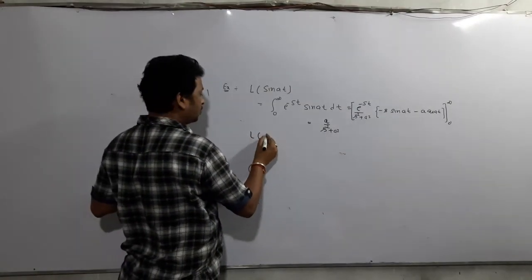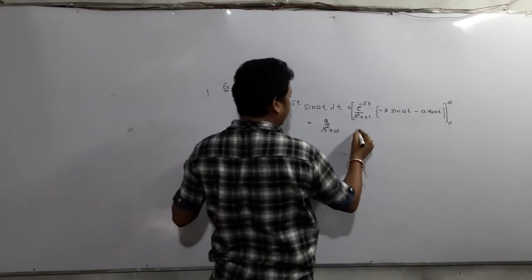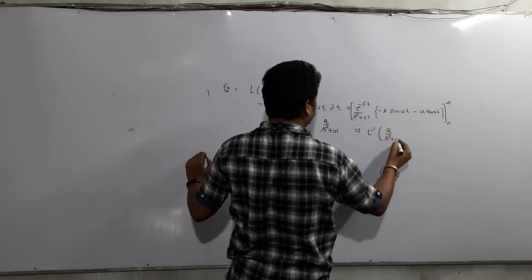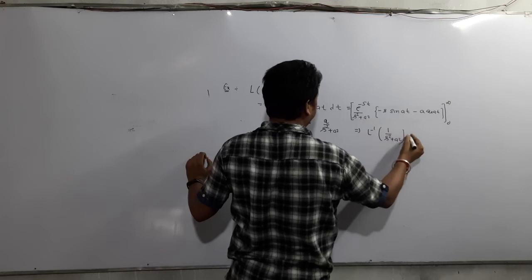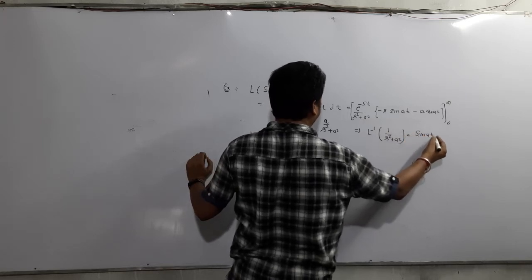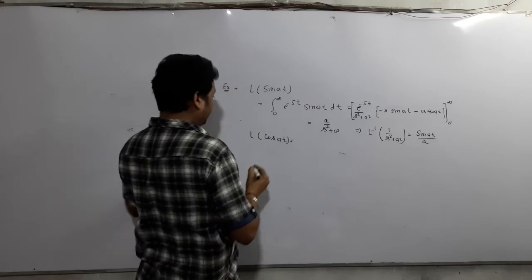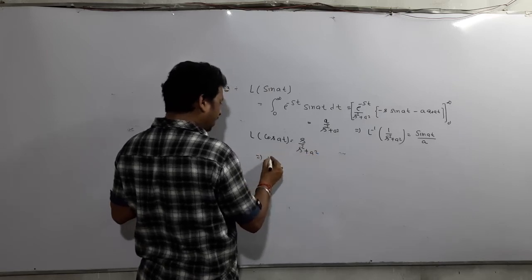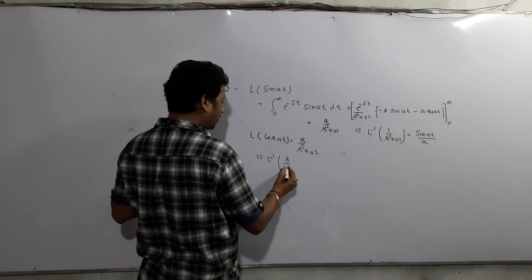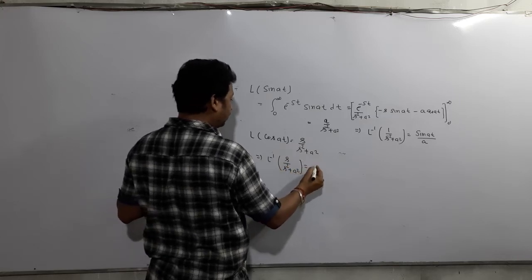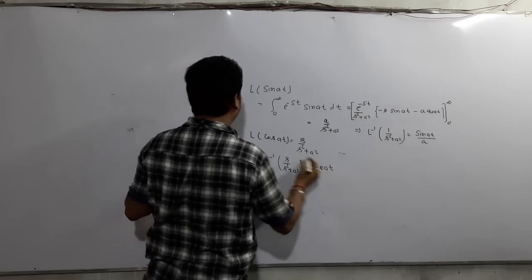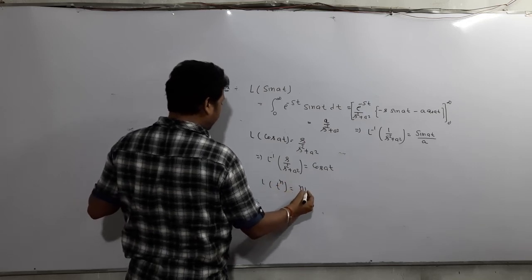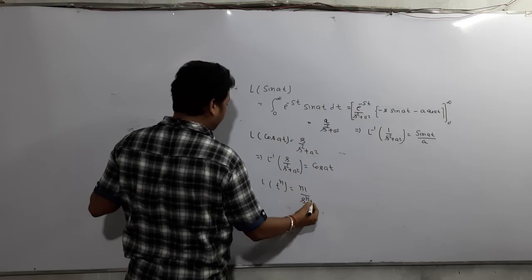From these results, we can also state the inverse transforms: Laplace inverse of a/(s² + a²) is sin(at), and Laplace of cos(at) is s/(s² + a²), so Laplace inverse of s/(s² + a²) is cos(at). Also, Laplace of t to the power n is n factorial over s to the power (n+1). These are all very important formulas.